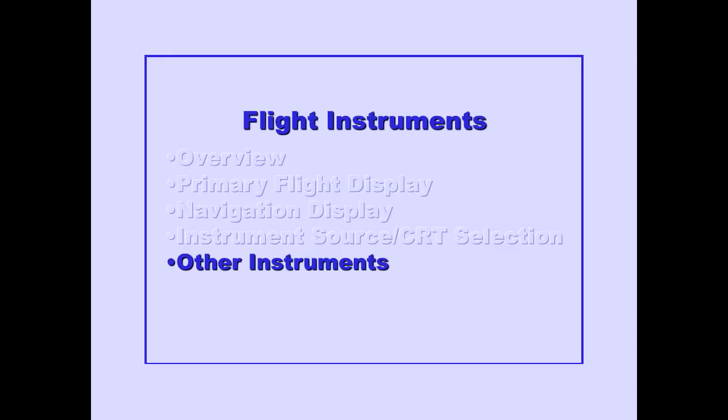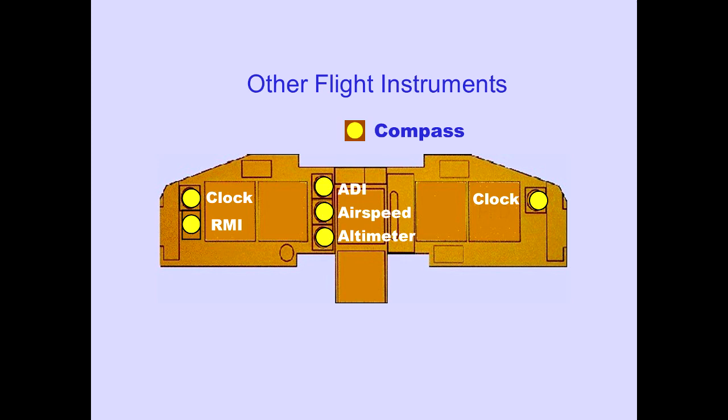Finally, let's discuss the other flight instruments. Other flight instruments are the standby compass, standby attitude deviation indicator (ADI), airspeed indicator, and altimeter. Two clocks and a radio magnetic indicator, RMI, are also provided.